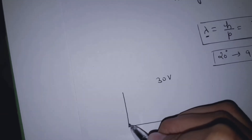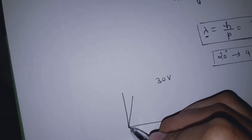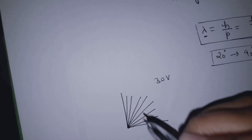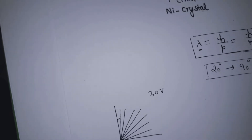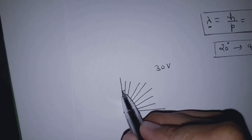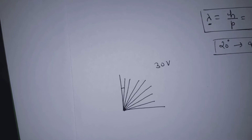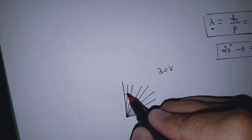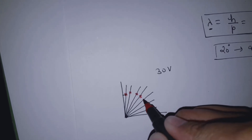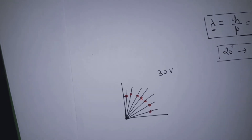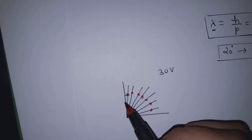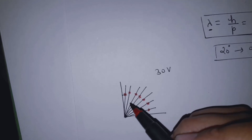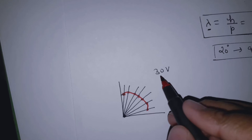First, we looked at 30V. This is a radial graph with angles at 20, 30, 40, 50, 60, 70, 80, and 90 degrees. At different angles, the number of electrons detected gives a current. The magnitude of this line represents the current at each angle, and we show the pattern for 30 volts.